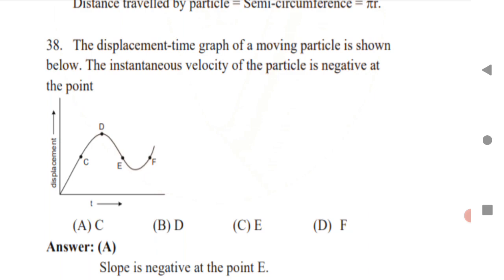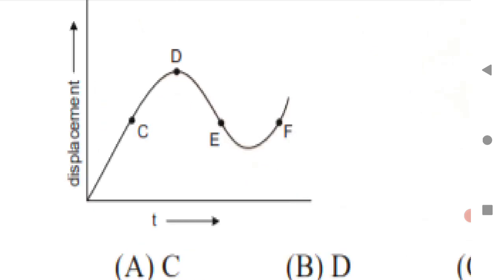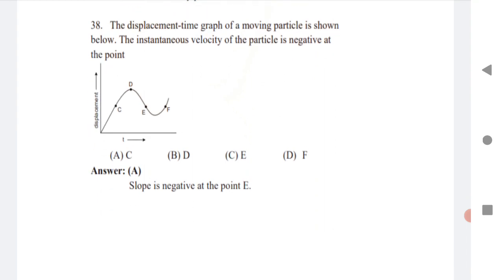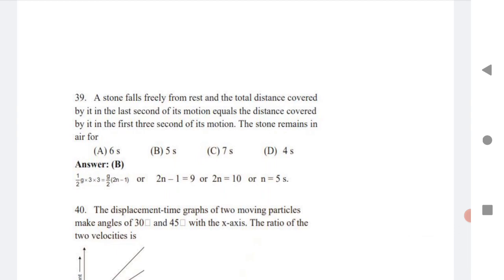An important question: from a displacement-time graph, identify where the velocity is negative. The slope is positive at C, constant at D, and at E the slope is negative (velocity is negative), then positive again at F. So the answer is that the velocity is negative at E. Very tricky — understand it carefully.